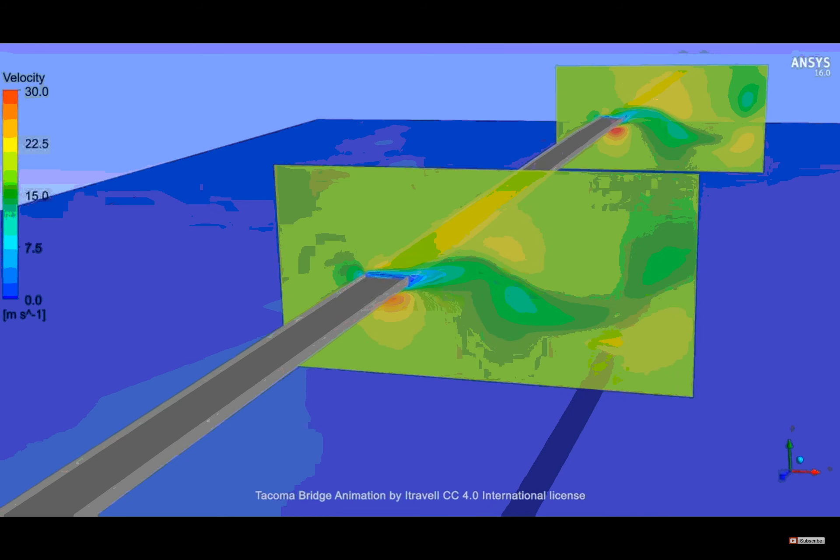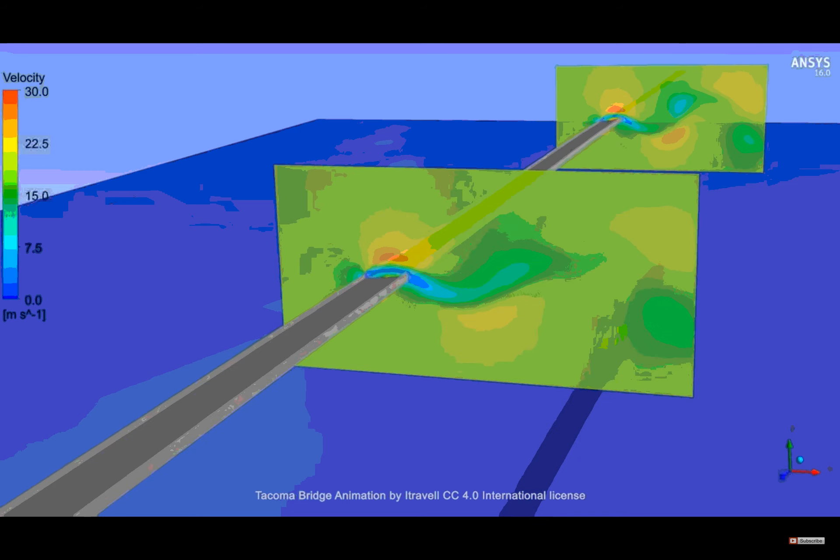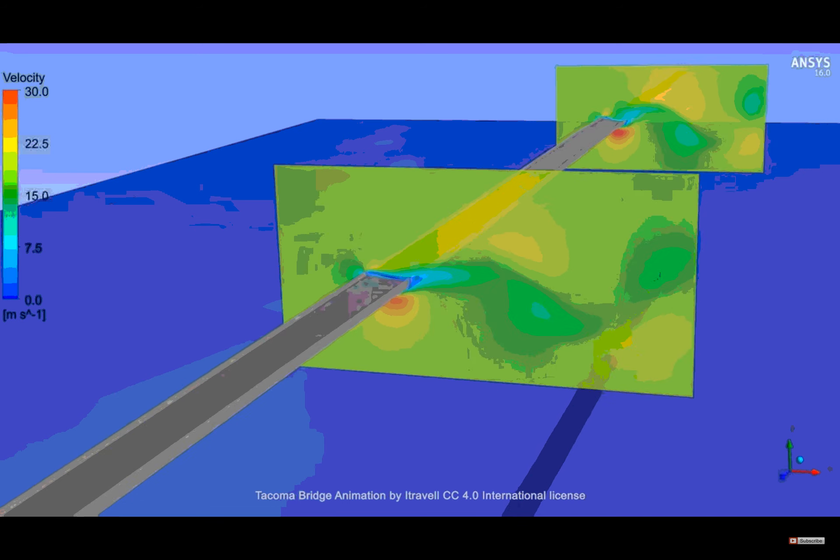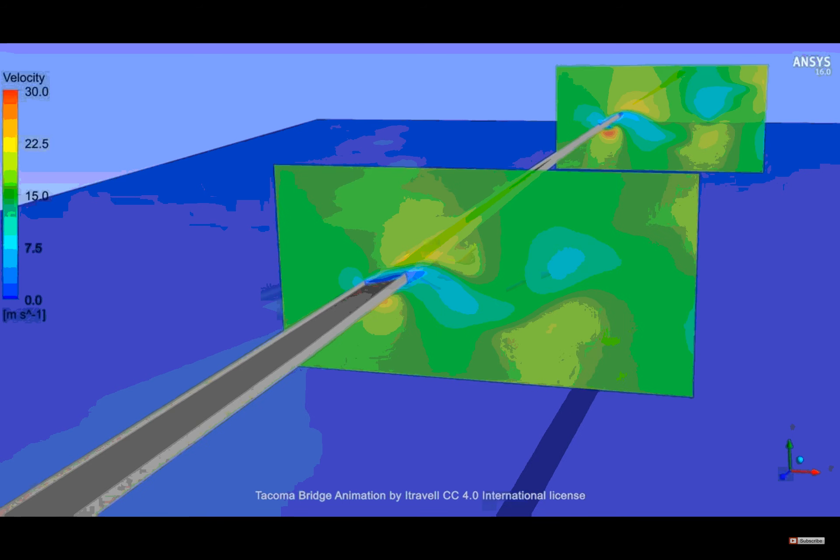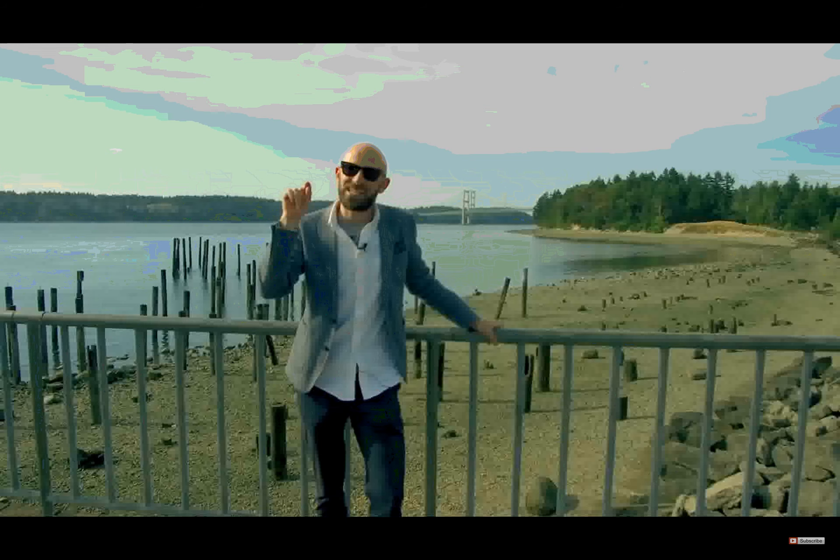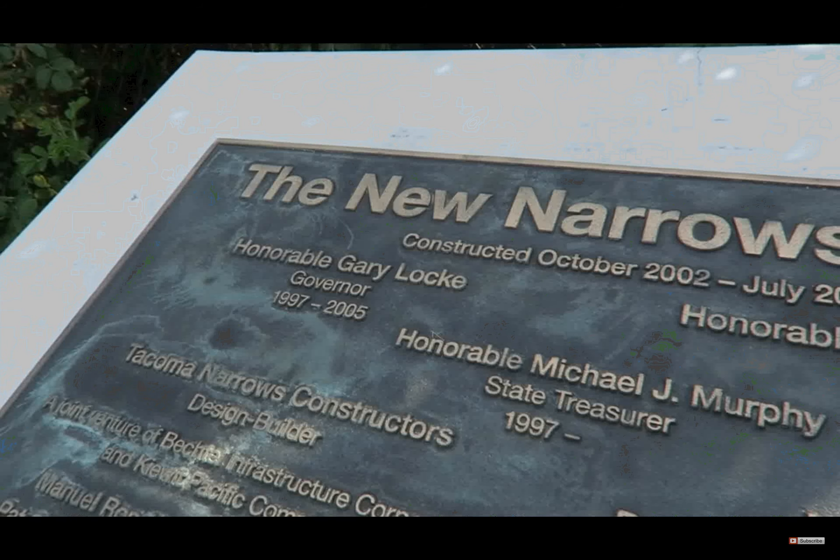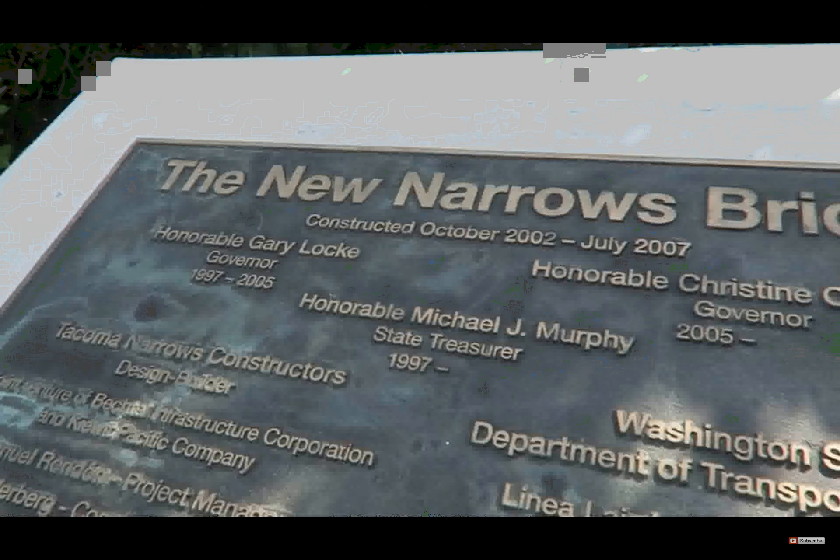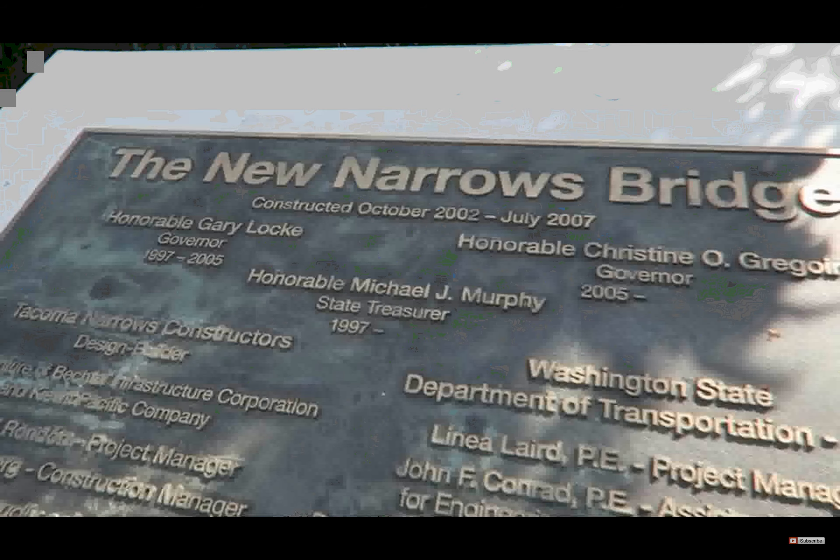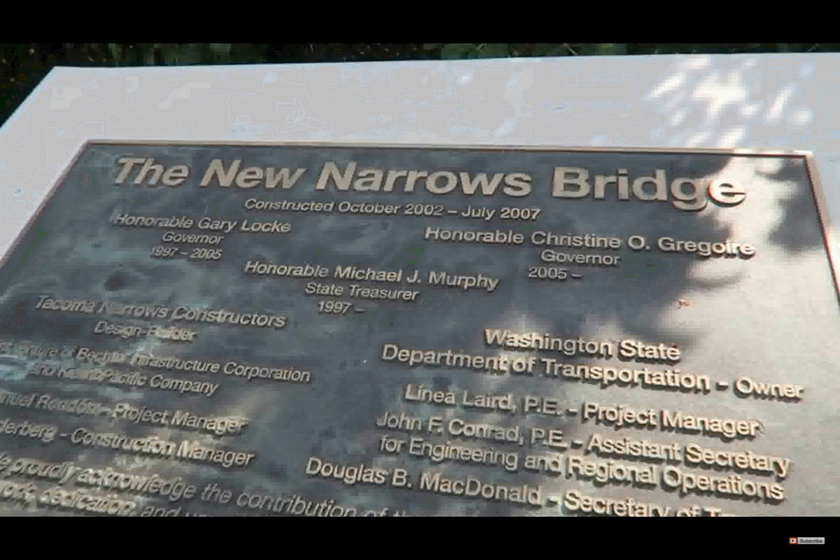This is something called aero-elastic flutter, and now it's a fully understood engineering thing. And they built both of these bridges to not have that problem. You know what's particularly cool about this story? The engineer who arrived on the bridge, tried to save the dog, and escaped in just the last moment, he was the guy who actually built the new one, was an engineer behind it. And he built wind tunnels and scale models of the bridge to make sure that this problem wouldn't happen again.